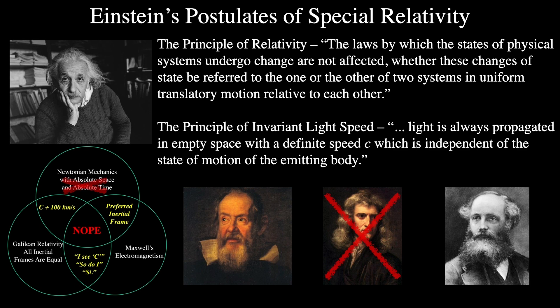On the other hand, in the case of the conductor moving past the stationary magnet, although no electric field is generated, the movement of the conductor through the magnetic field produces an electromotive force, which again results in a current. Einstein's key insight was that the relative motion between the conductor and the magnet produces the same physical effect — an electric current — in both cases, even though the mechanisms are described in different ways.